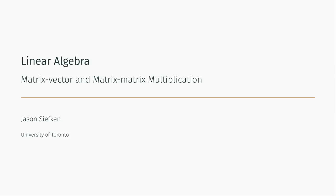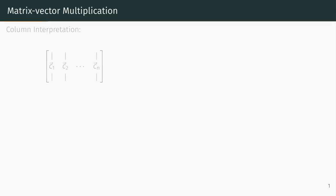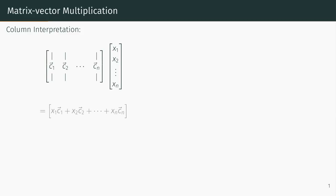In this video, we will learn how to perform matrix-vector and matrix-matrix multiplication. We will start with matrix-vector multiplication, which can be interpreted in two ways. The first is in terms of the columns of the matrix. Given a matrix whose columns are the vectors c1 through cn and a vector whose entries are the numbers x1 through xn, the matrix-vector product is the linear combination x1 times c1 plus x2 times c2 plus all the way down to xn times cn.